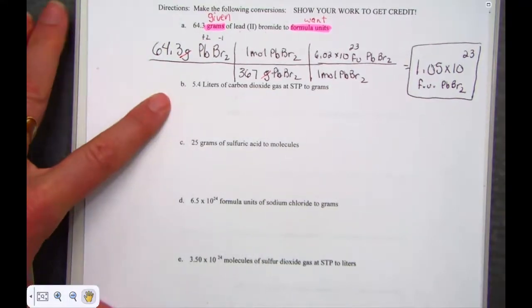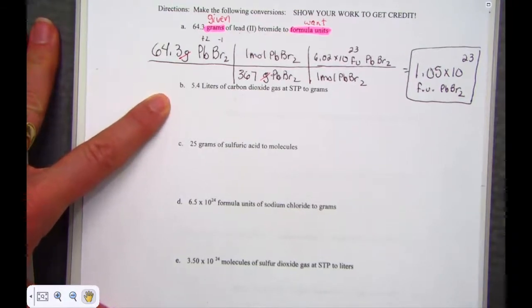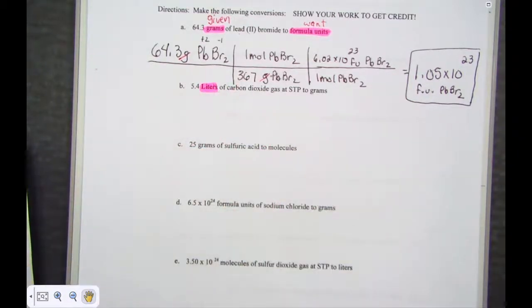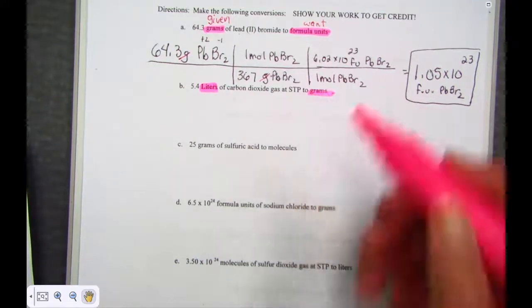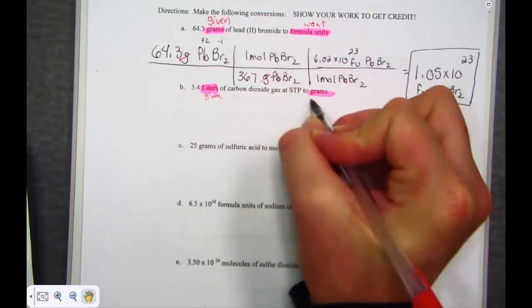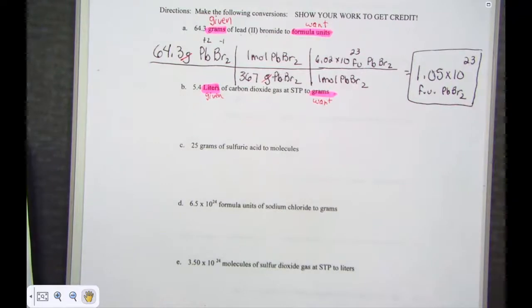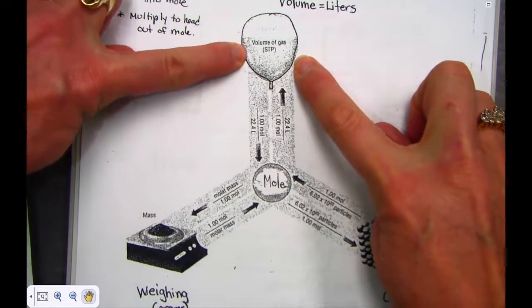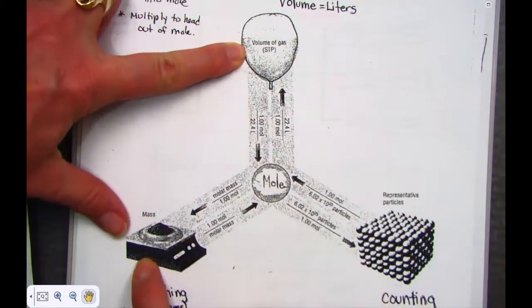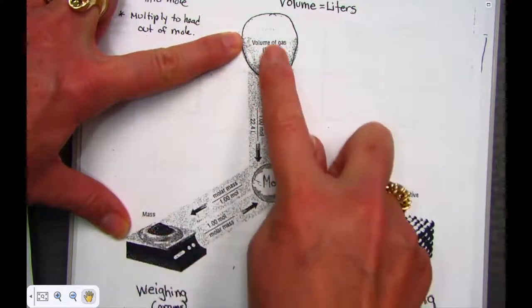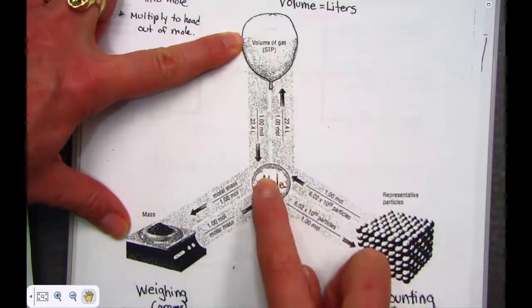Let's find the journey in the next one, letter B. We're given 5.4 liters of carbon dioxide. The given unit is liters, and we want to go to grams of carbon dioxide. If our given unit is a volume unit, the liter, and we want to end with the mass of carbon dioxide, I can clearly see there's no direct road between volume and mass, but I do see a pathway.